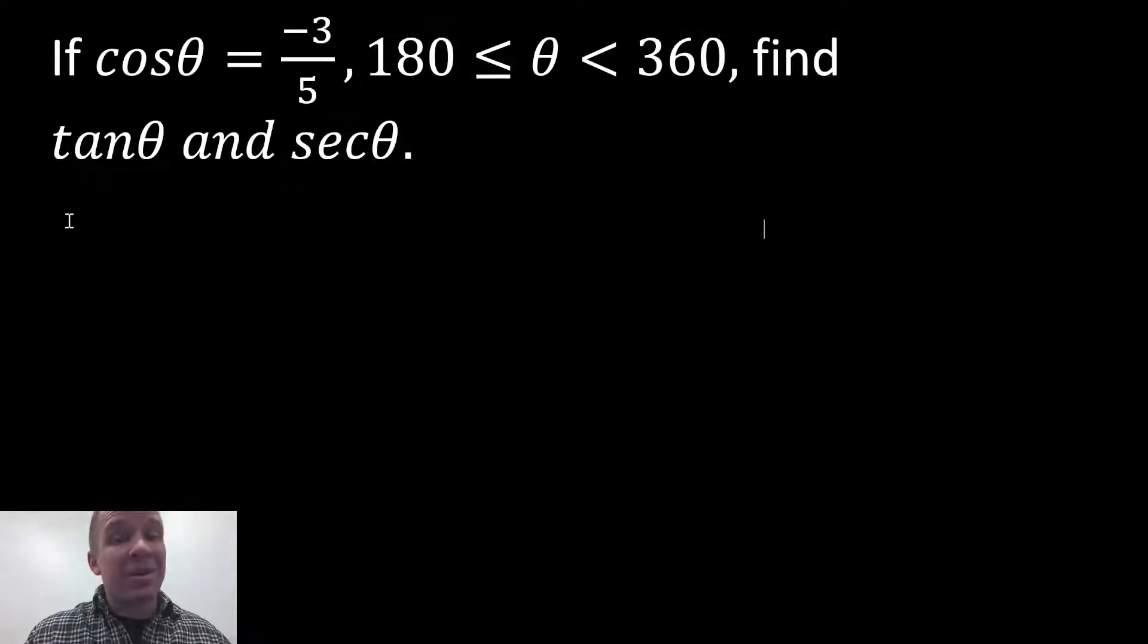What's happening, dogs? Mr. Allen here. We got ourselves an interesting question. If cosine of theta equals negative three-fifths and theta is between 180 and 360, find tangent of theta and secant of theta.